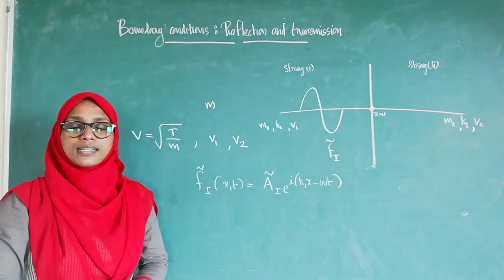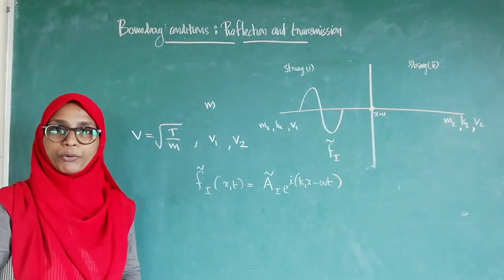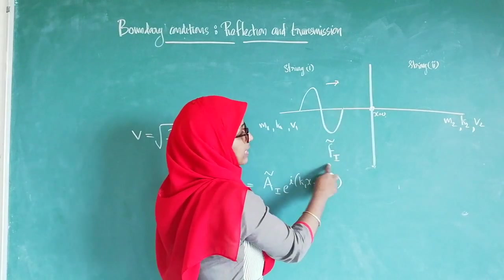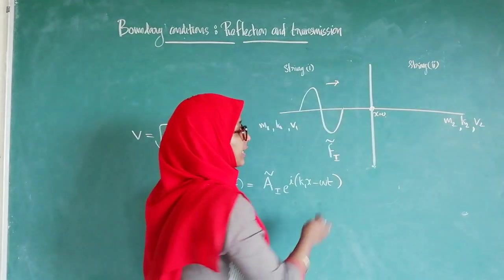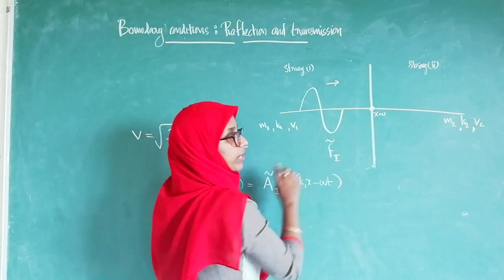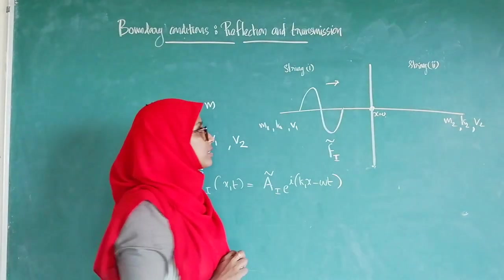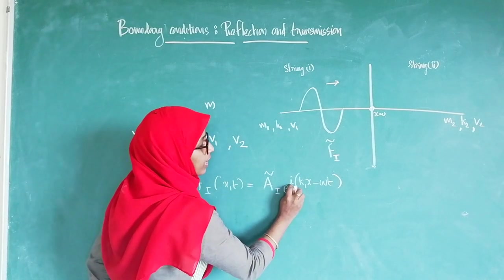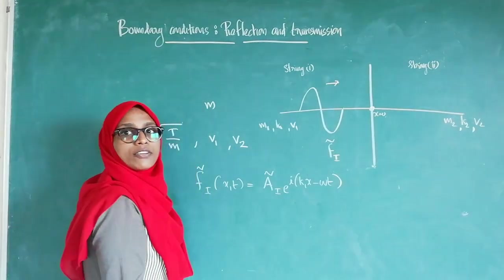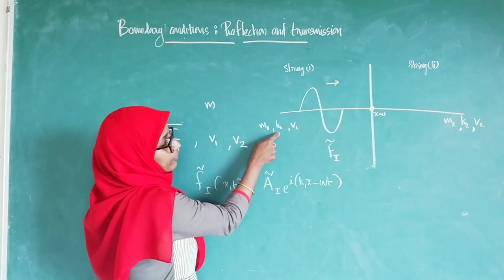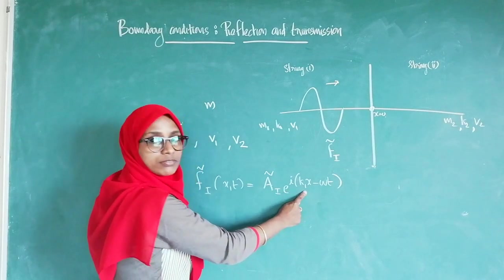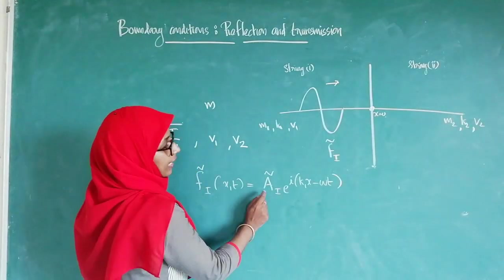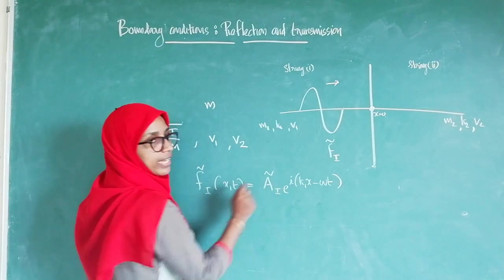Now let us consider a wave incident at the node or boundary. A wave which is travelling in the positive direction is considered as the incident wave in its complex notation, represented as F_I. We write F_I of X,t as A_I times e raised to i into K1X minus omega t, where it is travelling through string 1 with wave number K1 in the positive X direction. A_I represents the complex amplitude of the incident wave.